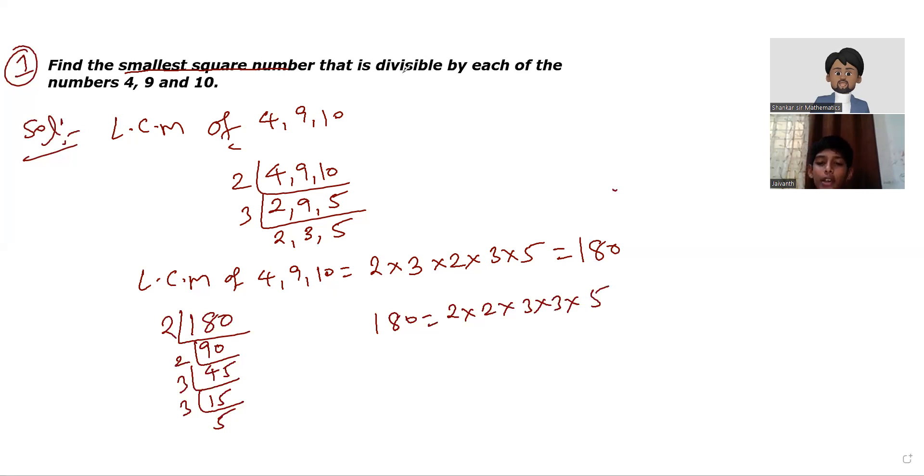Now 180 I can write as 2×2×3×3×5. Here observe Jayvans carefully. If suppose I need square number, if I need square number, what usually is required? Here 2 is in pairs, 3 is in pairs, but 5 is not in pairs.